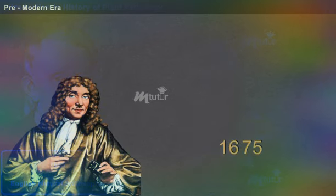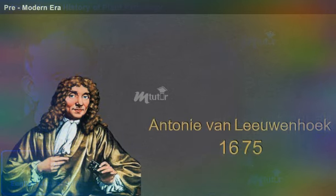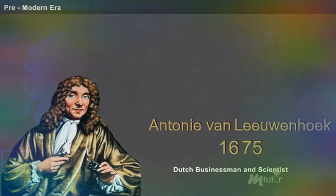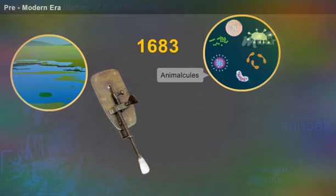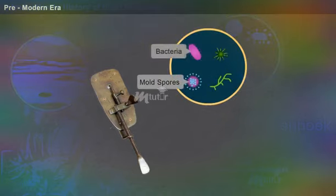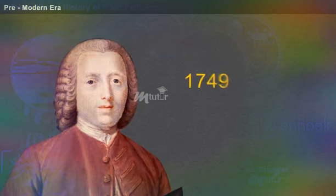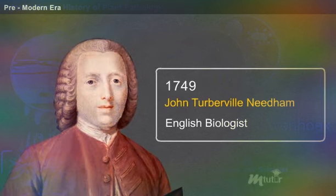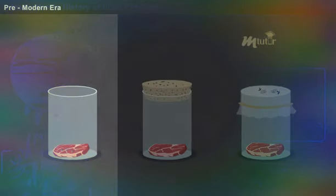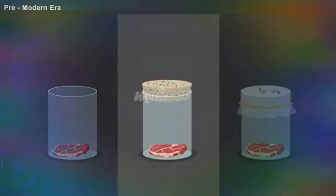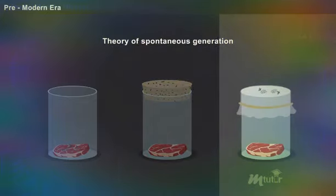In 1675, Anton van Leeuwenhoek, a Dutch businessman and scientist, invented the microscope. In 1749, John Turberville Needham, an English biologist, observed the appearance of organisms and concluded that microorganisms originated from non-living matter. He strongly supported the theory of spontaneous generation.